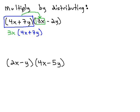We also want to distribute the (4x + 7y) onto the negative 2y. We see the negative 2y, then, is multiplied by the (4x + 7y).